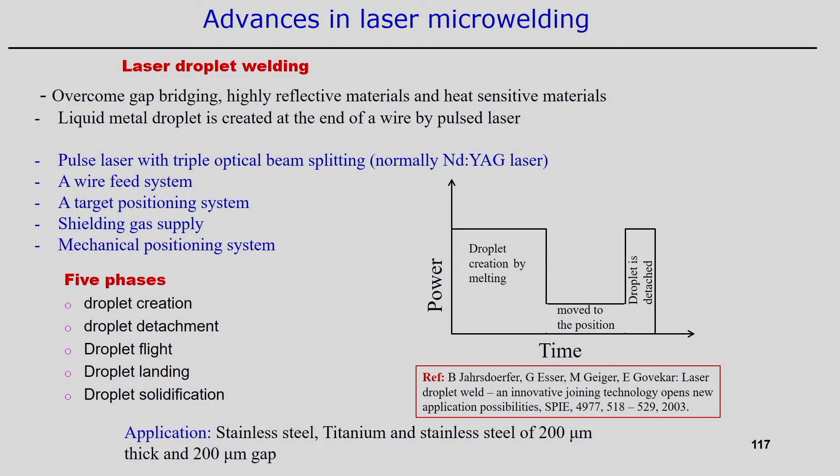If the sheet is 200 micrometers thick and there is a 200 micrometer gap, that gap is large relative to the material thickness and is significant in micro welding applications. In that case, a 200 micrometer gap is huge, and that kind of situation can be handled effectively using the laser droplet welding process.